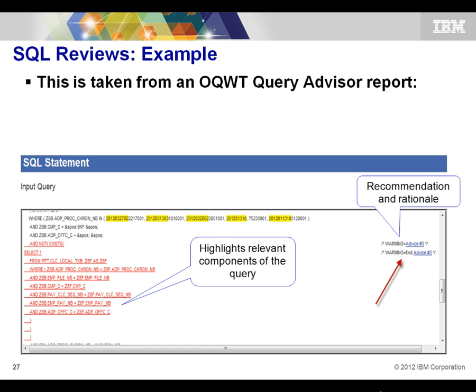Here's an example from a Query Workload Tuner advisory report created recently by one of our developers. The query advisor highlighted a portion of the query — straight from the summary report — it highlights in red what part of the query needs to be revisited. Over to the right it gives you the recommendation number, and if you look that up in the report it gives you verbiage on what to look at: possibly removing a sort, changing the index used, pointing to additional columns, or creating an index. It tells you exactly where in the query the problem lies that's causing the increased CPU or I/O.